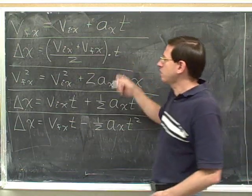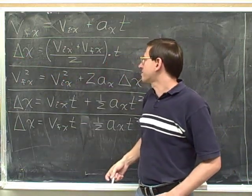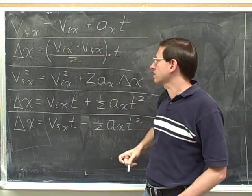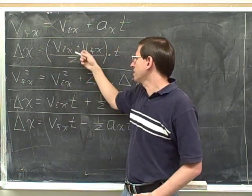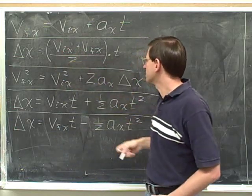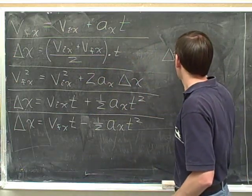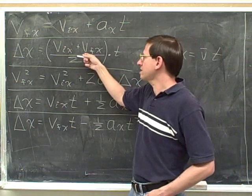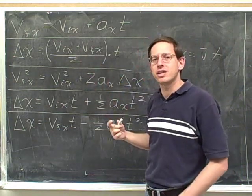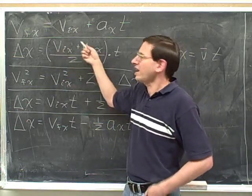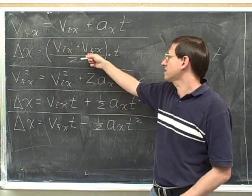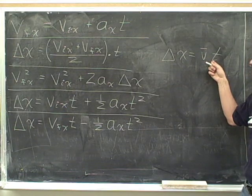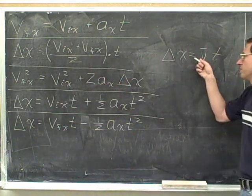The second equation: delta x equals, as a fraction, v initial x plus v final x over 2, multiplied by t. This fraction is really just telling you the average speed — if you take the initial speed and the final speed and average them together, you get the average speed. So this equation is common sense: distance equals rate times time. Your distance equals your average rate times your time, which might help you remember this equation.